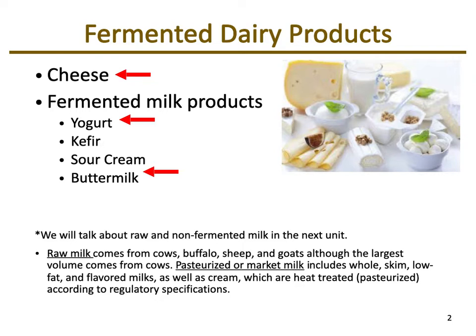We will talk about raw and non-fermented milk in our next unit when we discuss foodborne illnesses. Just to make sure we all have the same terminology: raw milk is milk that directly comes from the mammal. In the US this mostly comes from cows, but we can also have eco farms with different types of mammals — goats, buffalo, even camel's milk — available in raw, pasteurized, or fermented forms like yogurt or cheese.